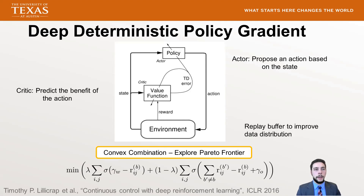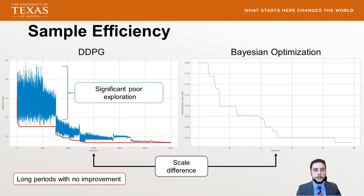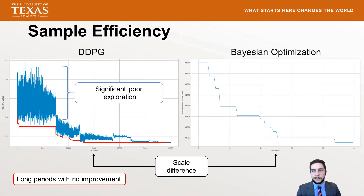Looking at sample efficiency: on the left we show the objective value throughout training, and on the right the best value for Bayesian optimization. The scale difference in iterations is significant — Bayesian optimization needs only about 100 to a few hundred iterations to achieve its final output, whereas DDPG needs close to 30,000 iterations before it is fully trained. DDPG also shows significant poor exploration with very bad results that network operators want to avoid, and long periods with no improvement where many configurations result in wasted samples.